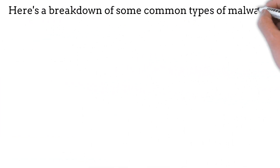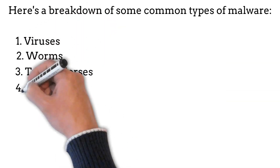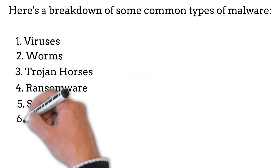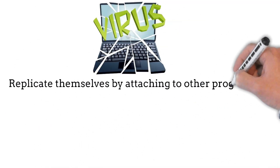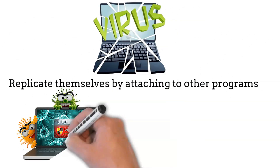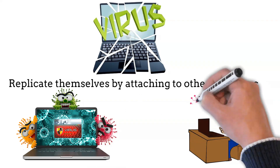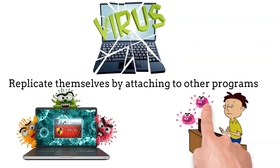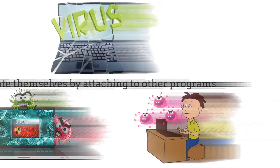It encompasses a wide range of malicious programs including viruses, worms, trojan horses, ransomware, spyware, adware, and rootkits. Viruses are programs that replicate themselves by attaching to other programs. They can spread throughout a computer system and cause various types of damage, such as corrupting data or deleting files.